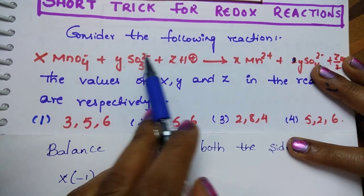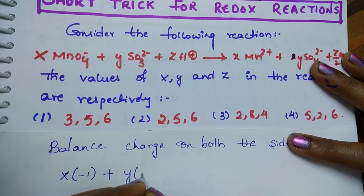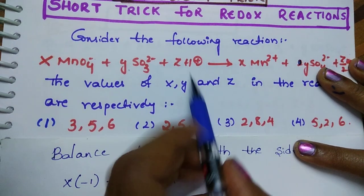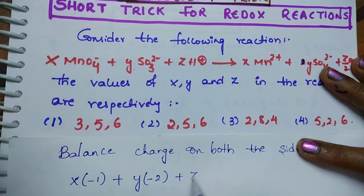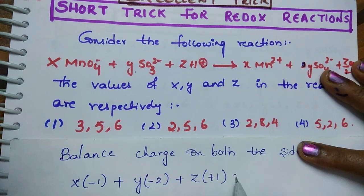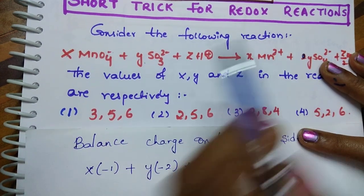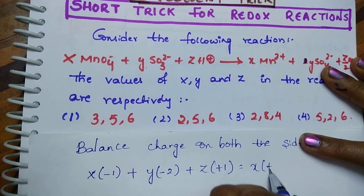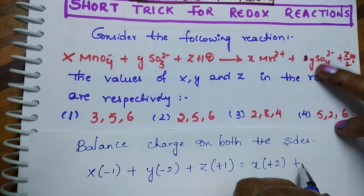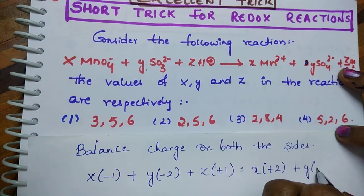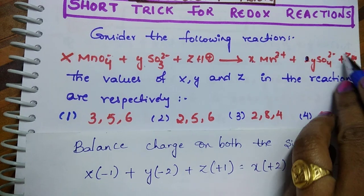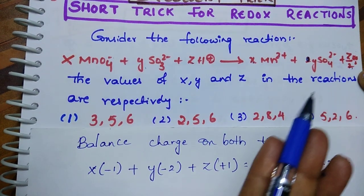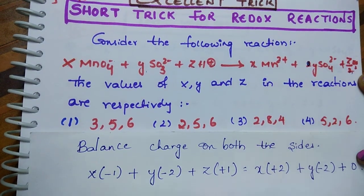See, x into (-1) plus y into (-2) plus z into (+1) is equal to x into (+2) plus y into (-2) plus z/2 into 0, so it will be 0.